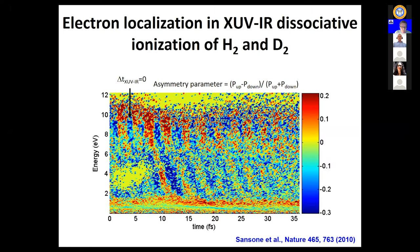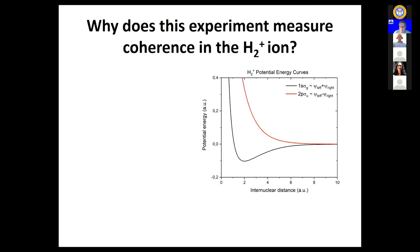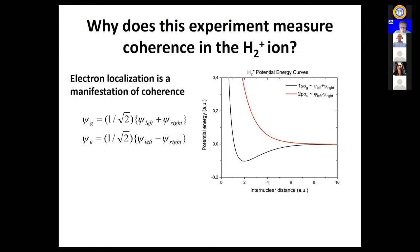Why does this experiment tell us something about coherence in the H2+ ion? Electron localization is in fact a manifestation of coherence. The electronic wave functions belonging to the 1s sigma g and 2p sigma u states can each be written as linear combinations of atomic wave functions, where the single bound electron in H2+ is located on the left or right proton. The difference between the gerade and ungerade states is simply whether this combination has a plus or minus sign.